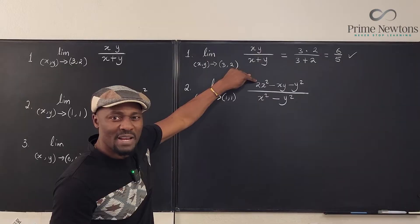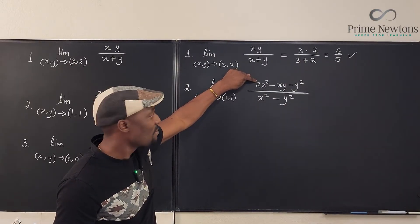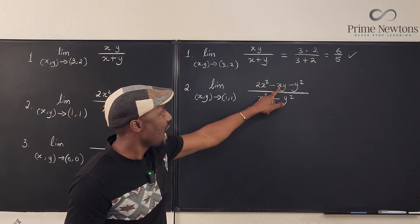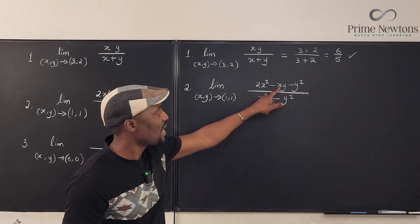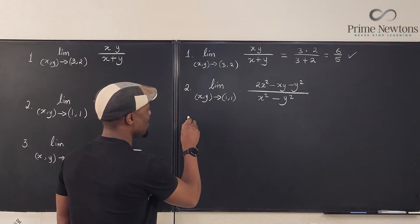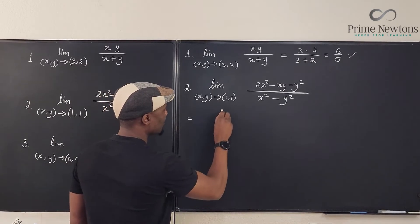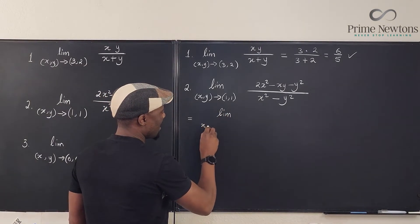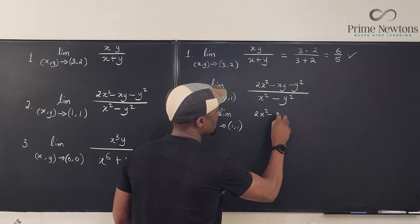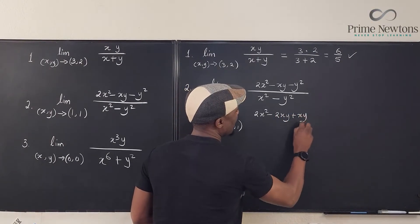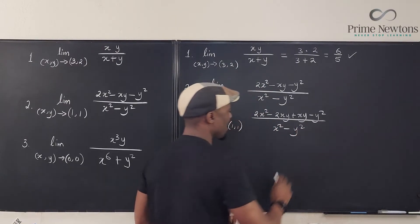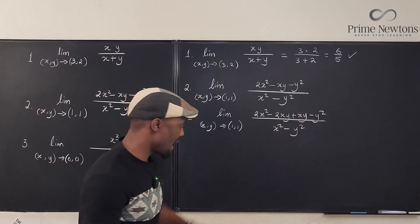Can we factor this? Is this a quadratic? Yes, actually. This is a quadratic because you can factor this by splitting this in the middle and writing it instead as minus 2xy plus xy. Okay, you have to be able to do that.